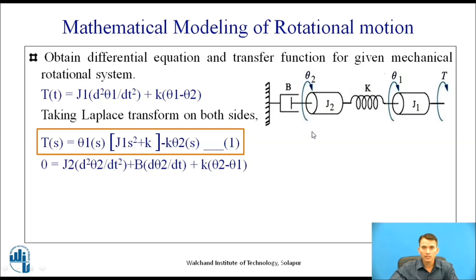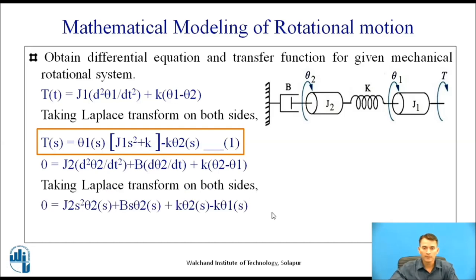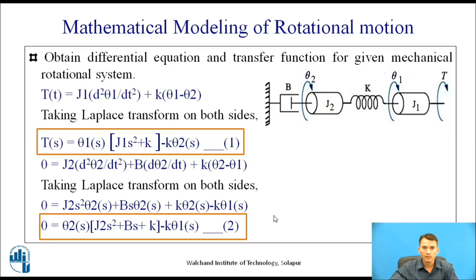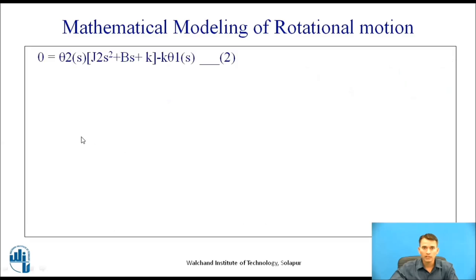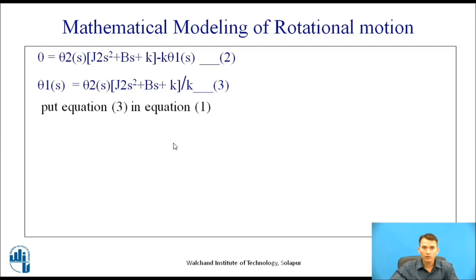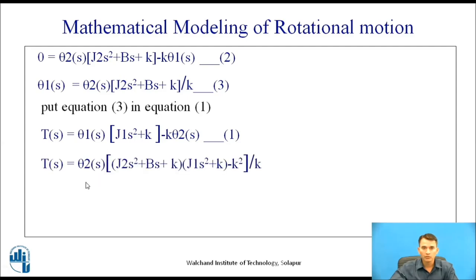Now, finding the differential equation for inertia J₂ and taking the Laplace transform on both sides. Taking Θ₂(s) common gives equation 2. From equation 2, solving for Θ₁(s) gives equation 3. To find the transfer function, substituting equation 3 into equation 1 and bringing equation 1 here gives us the combined expression.